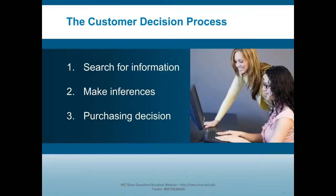We're going to do this in three steps. First, we'll spend quite a lot of time talking about how customers search for information. The answer is going to be different in different markets and different over time as customers gain more expertise. I'll make three points about searching for information. The second topic is the inference process — customers, when they can't search, make it up. They'll use observable information that they can see to infer the stuff that they can't see. We'll spend some time talking about the inference process and why that's important to the innovation process.